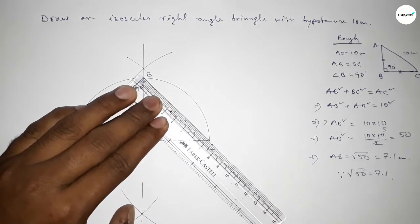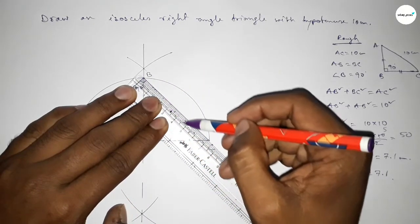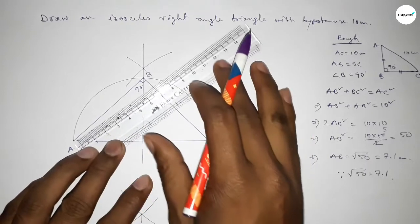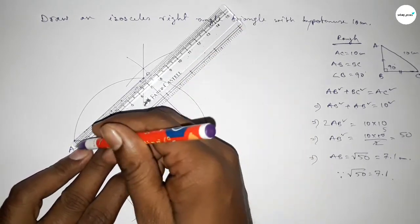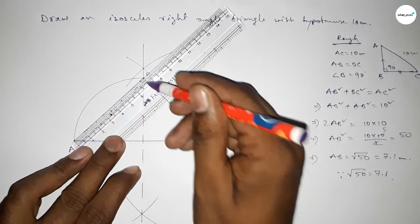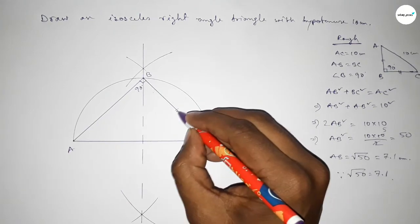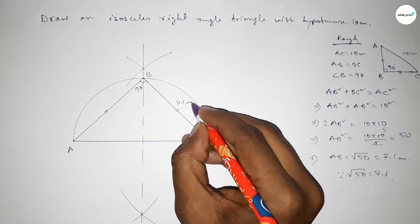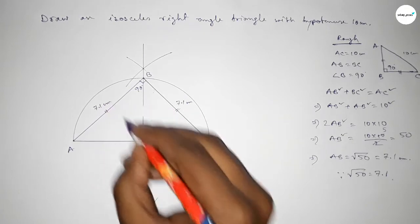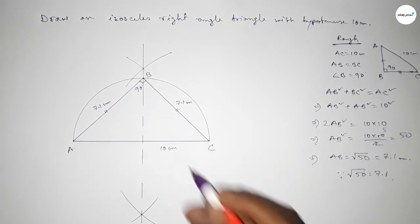Now checking all the sides are 7.1 or not. So this is 7.1 perfectly and checking this line, so this is 7.1 perfectly. So this side and this side are equal and this is 7.1 centimeter and this side also 7.1 centimeter.